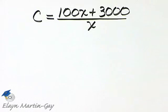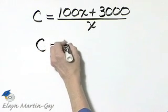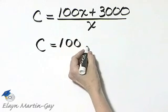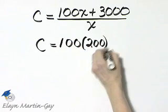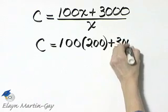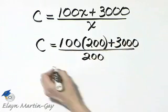So we want to find the average cost per desk when manufacturing 200 computer desks. So I want to know what is C when X, the number of desks, is 200. I'll replace X with 200 and I'll simplify the expression on the right.